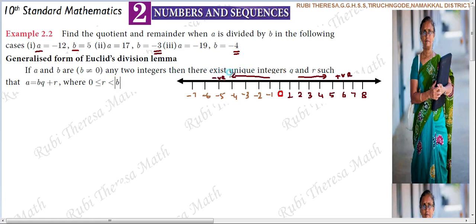On the number line, we have a concept that we need to understand. Towards the right, the value increases. This applies to positive integers.